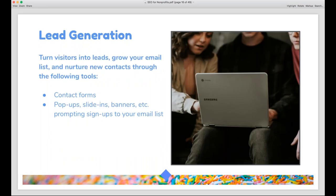SEO is also great for lead generation — capturing information. One of the most frequent questions I get from nonprofits is how to get more people to sign up for an email list, and one great way is through your website. If you've optimized for SEO and you're bringing traffic to your website, install contact forms, pop-ups, slide-ins, and banners prompting people to sign up. Programs like OptinMonster and WordPress plugins can help with this. SEO is great for growing your email list and capturing leads to cultivate into donors.